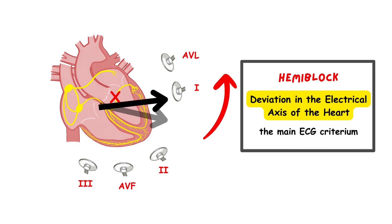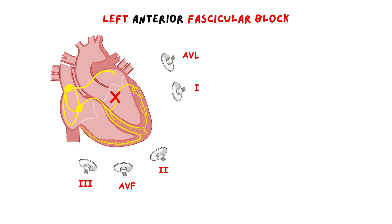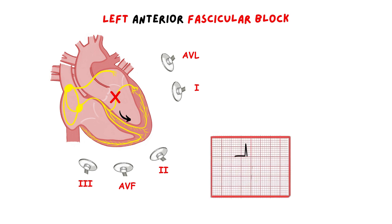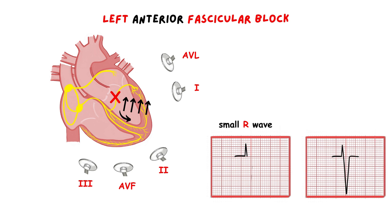When there is a left anterior fascicle block, the impulses to the left ventricle are spread only via the posterior fascicle. So at the beginning, the impulse travels downwards, then the impulse from here must be spread to the whole left muscle mass, and the impulse is directed upward and to the left. So the initial downward conduction in the inferior leads will be recorded as a small upward wave — a small r-wave — because the impulse is directed towards the positive electrodes recording from the inferior point. Then the impulse travels in the opposite direction away from the positive electrodes, which is going to be recorded as a large negative wave, a large S-wave.